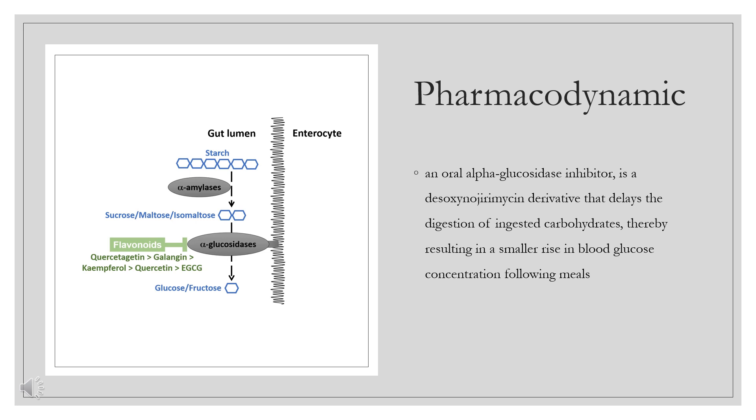Miglitol, an oral alpha-glucosidase inhibitor, is a desoxynoduramycin derivative that delays the digestion of ingested carbohydrates, thereby resulting in a smaller rise in blood glucose concentration following meals.